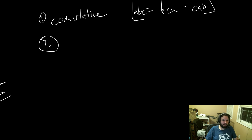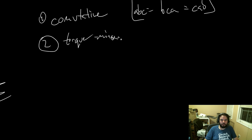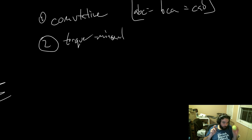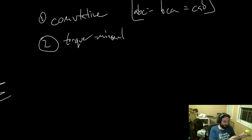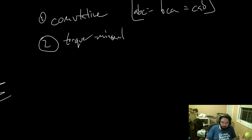Commutative is one desirable property when interpolating. Another property is torque minimal — if your great arc is the shortest distance between two points, that's torque minimal. If it did something ridiculous where it wasn't the shortest distance, that would not be torque minimal. Your third property is constant velocity.